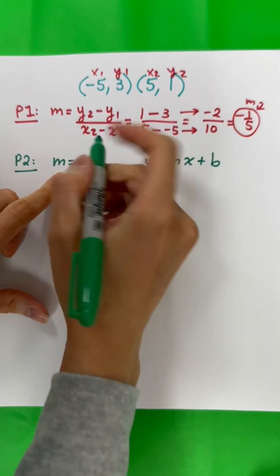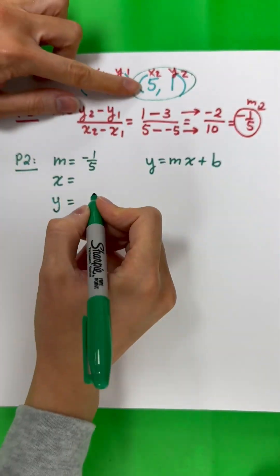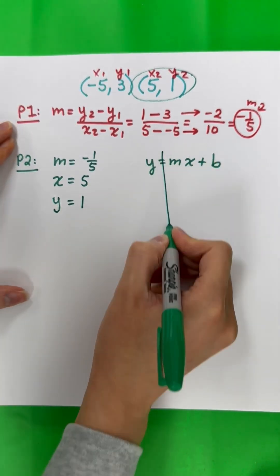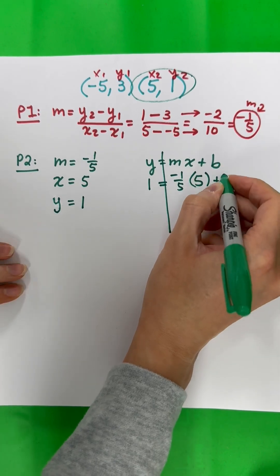We need to find our Y-intercept B. M is negative 1 fifth. For X and Y, you're going to pick one point. I'm going to pick this one - it doesn't matter which one. X is 5, Y is 1. Let's put the numbers in. Y is 1 equals M is negative 1 fifth, X is 5 in parentheses, plus B.